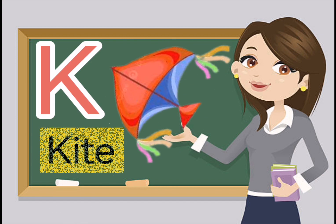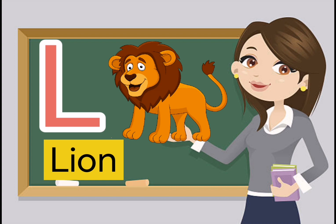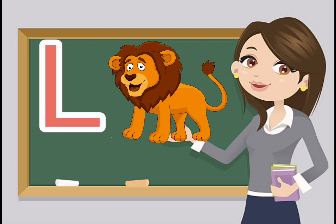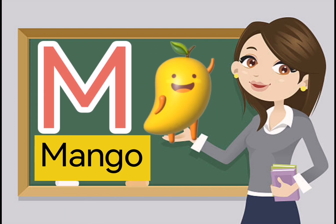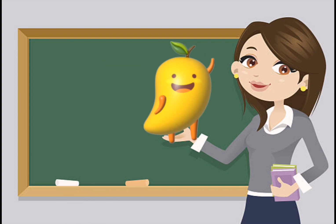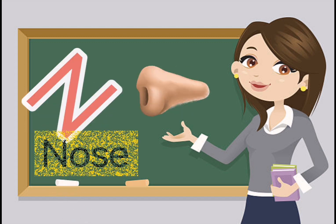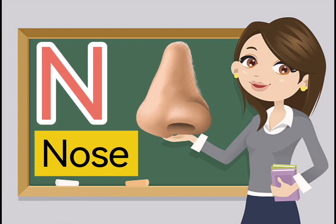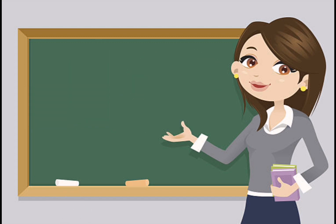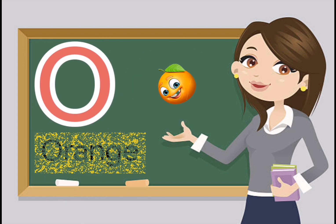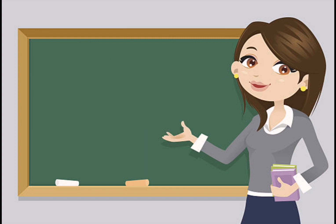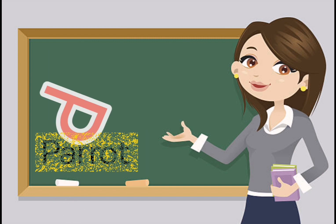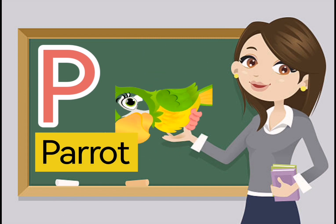K for kite, L for lion, M for mango, N for nose, O for orange, P for parrot.